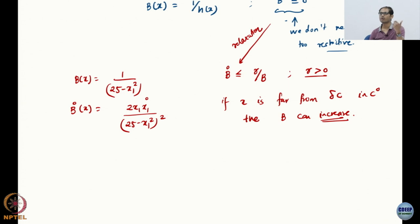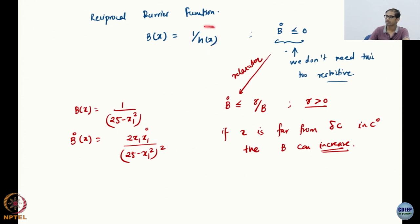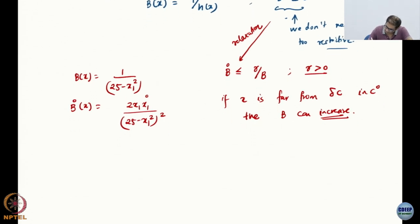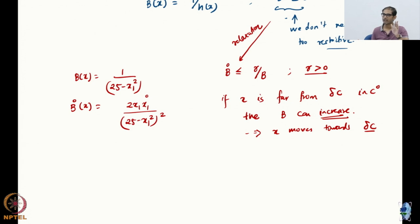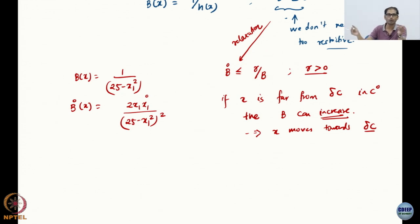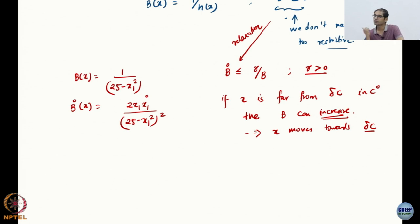H is more and more positive as you go further into the interior — that is the definition of the set. So obviously h is positive, 1 over h is also positive. If you start in the interior, B is going to be positive and so the right-hand side is going to be positive. What I am saying is that the derivative is less than some positive number — so B can increase. This allows for B to increase. What does increase of B mean?